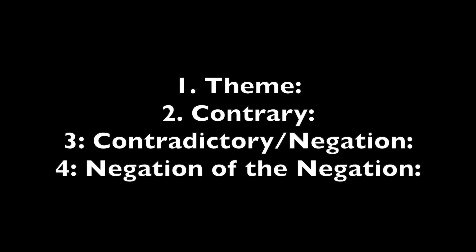So there you have it: the theme was justice, the contrary was unfairness, the contradictory or negation was injustice, and the negation of the negation — which should test the full limit of human experience for your character — is tyranny. You can come up with different ways to do this by using different themes.